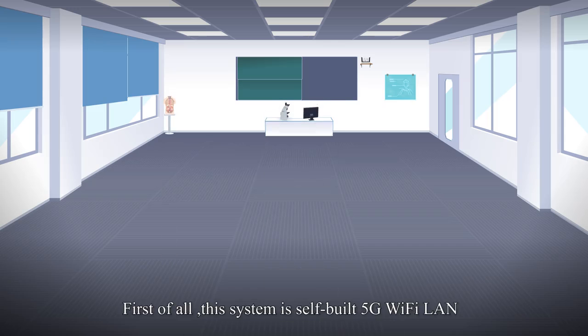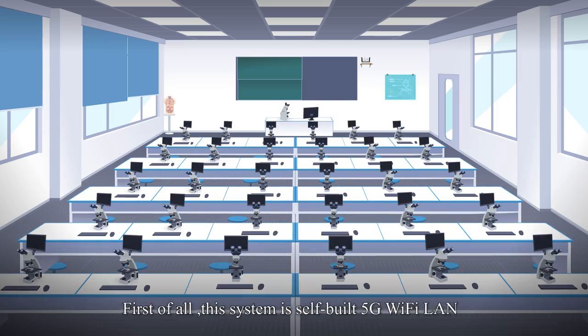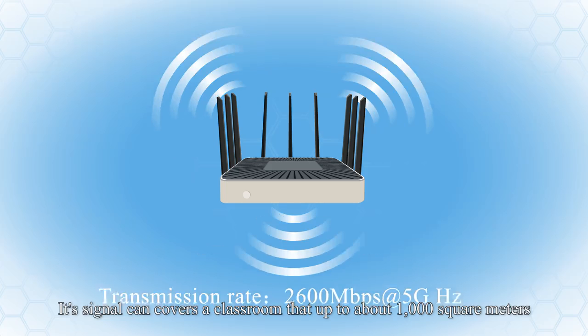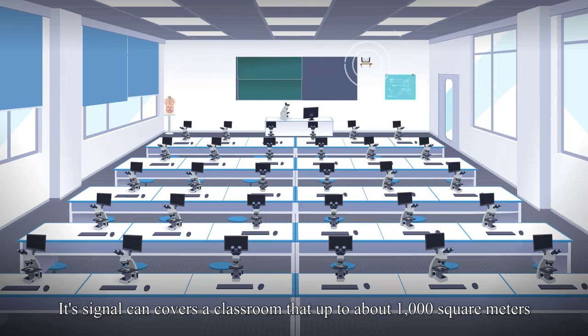First of all, this system is self-built 5G Wi-Fi LAN with high-speed data transmission. Its signal can cover a classroom up to about 1,000 square meters.